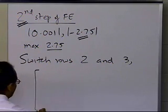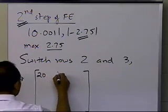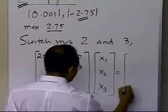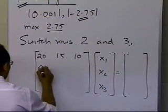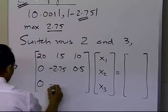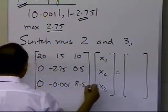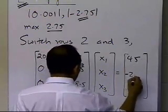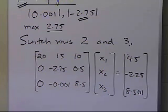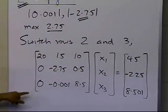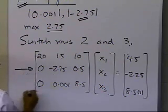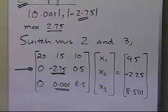Writing this in matrix form after switching rows 2 and 3 — switching rows does not make any changes to the solution vector. The new matrix has: row 1 unchanged (20, 15, 10); row 2 becomes 0, minus 2.75, 0.5; row 3 becomes 0, 0.001, 8.5. Right-hand side values are 45, minus 2.25, and 8.501. The maximum absolute element has been moved to the pivot location. We'll use this pivot row to zero out the element below it in the second step of forward elimination.